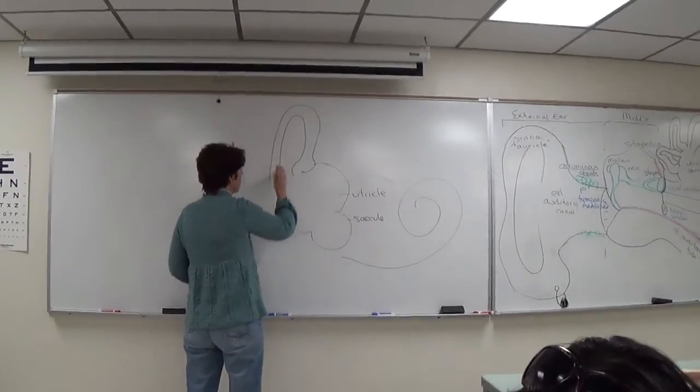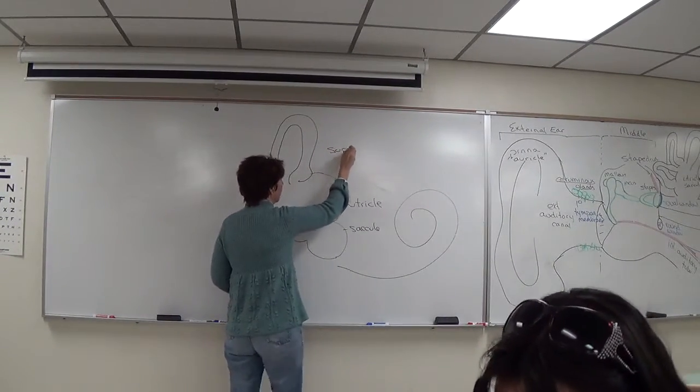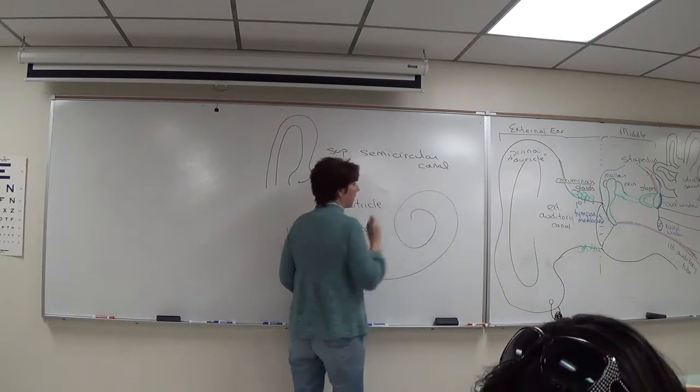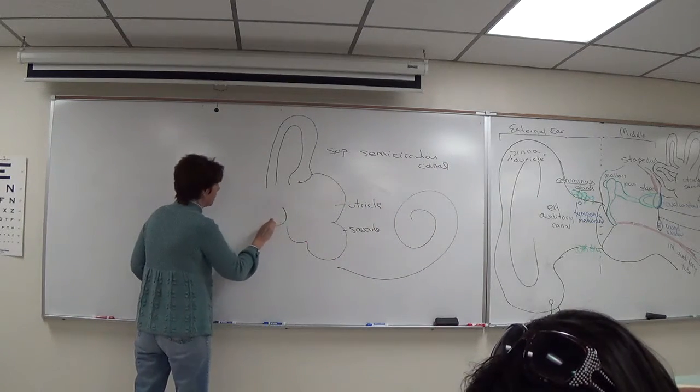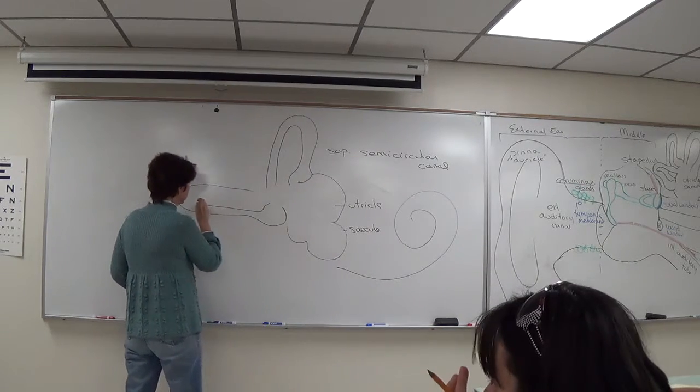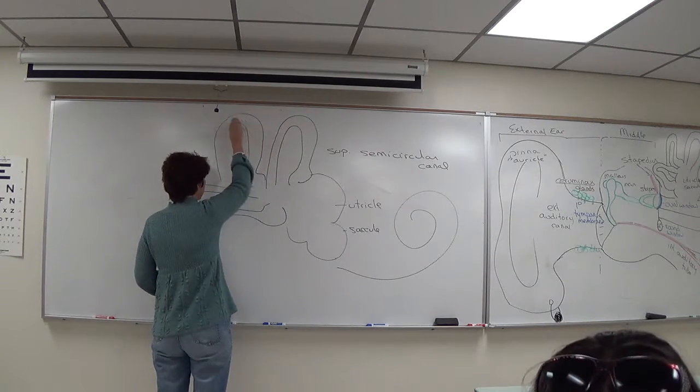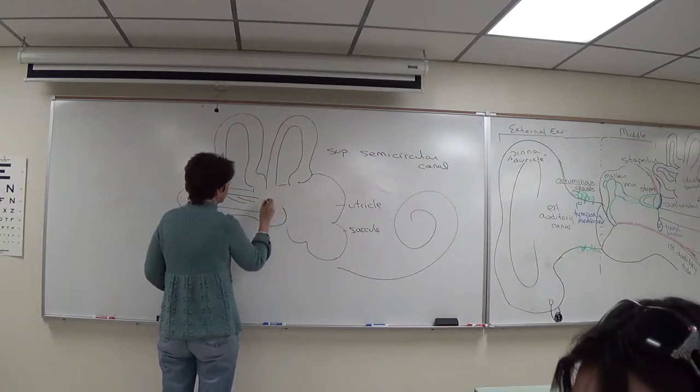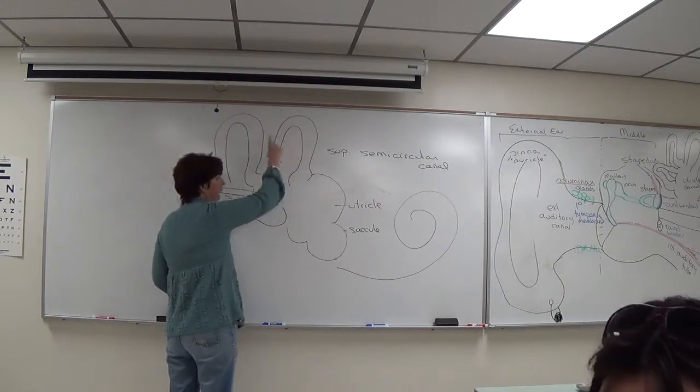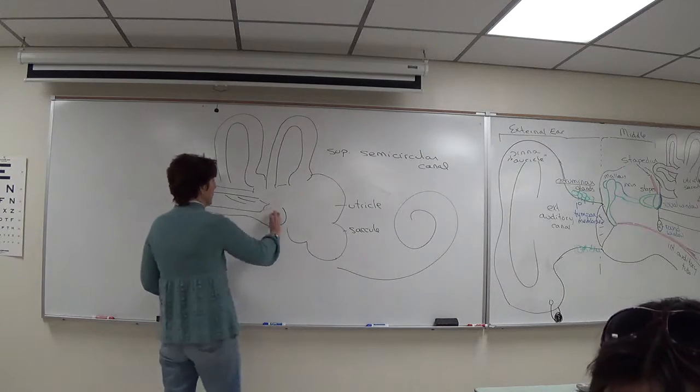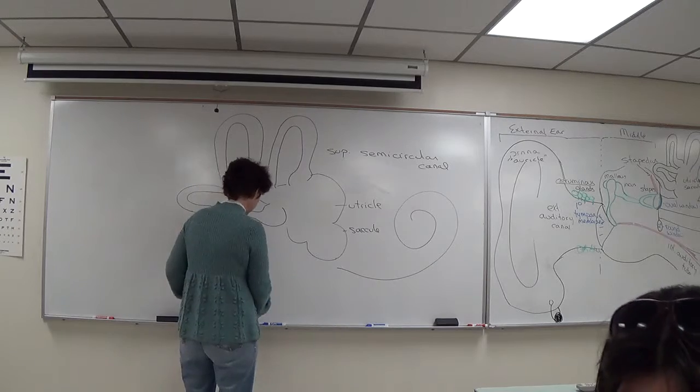So the cochlea is going to be over here. And we would have the superior or anterior semi-circular canal. And then we would have the lateral. And then kind of forming the back wall here, we would have the posterior. Now each of these has a dilated region with that blue tube I talked about. And sitting in each of these dilated regions is a cluster of hair cells.